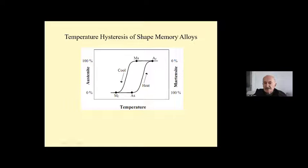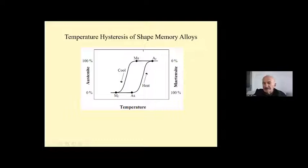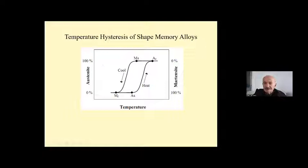This is the temperature hysteresis of shape memory alloys. Thermally induced martensitic transformation occurs on cooling; the transformation starts at the Ms temperature and is completed at the Mf temperature. After that, on heating, the reverse austenitic transformation starts at the As temperature. Ms is the martensite start and Mf is the martensite finish temperature.